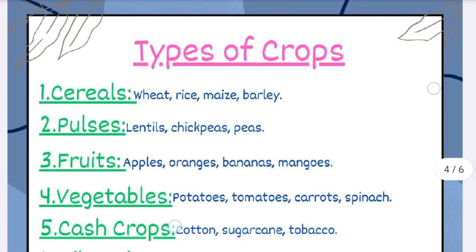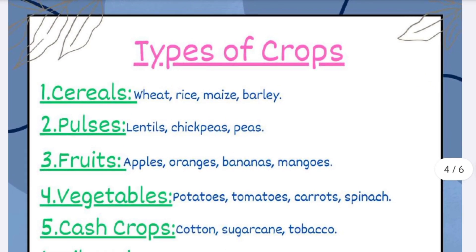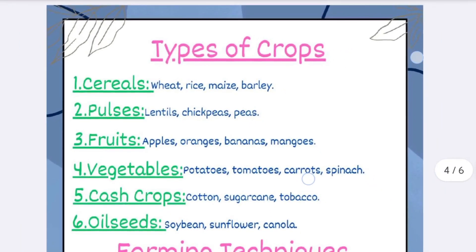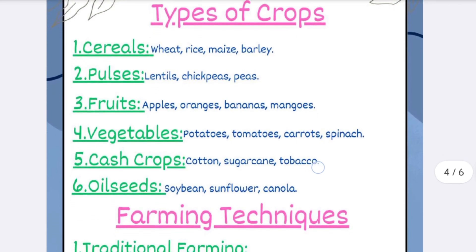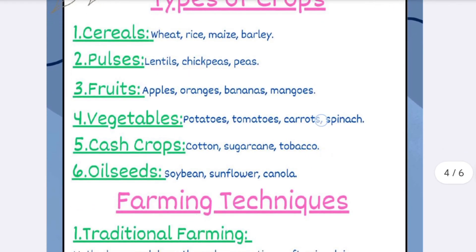Types of crops: number one, cereals; two, pulses; three, fruits; then vegetables; cash crops; and the last one is oil seeds.